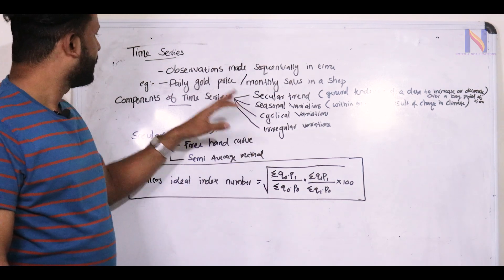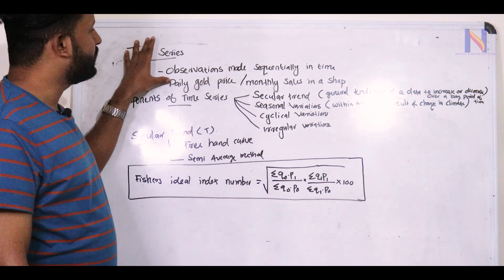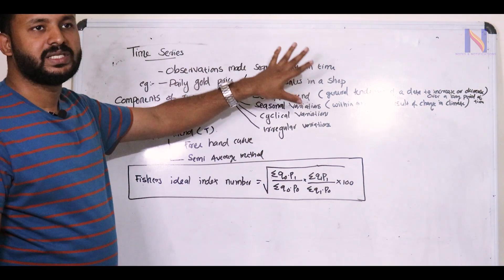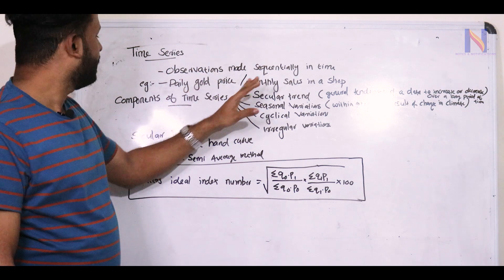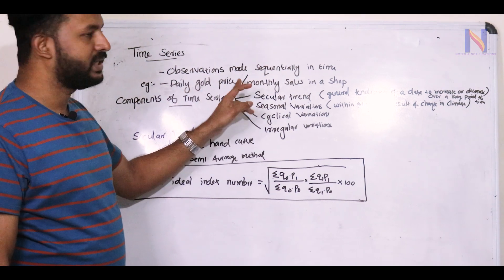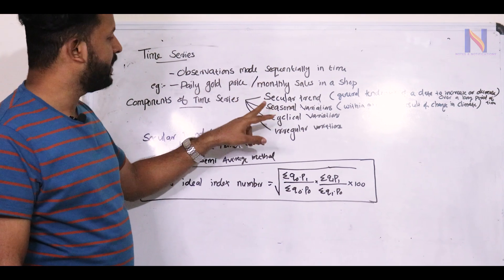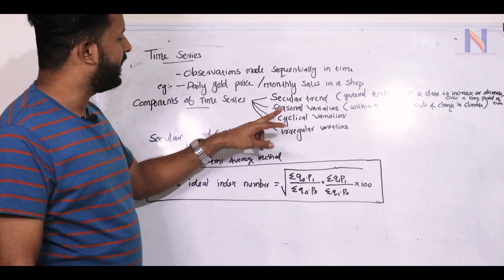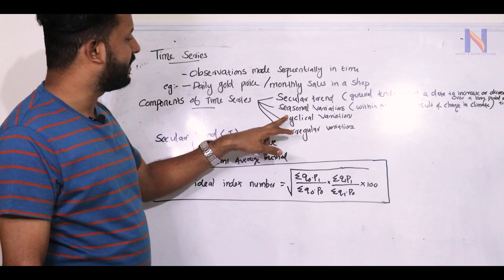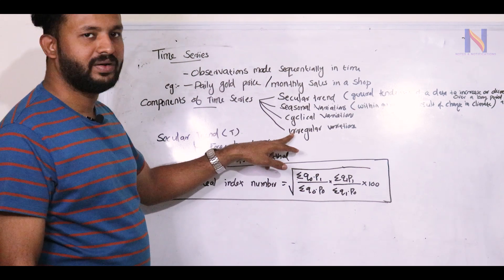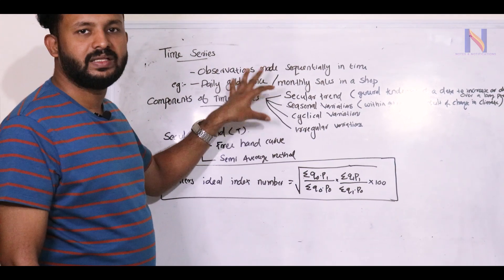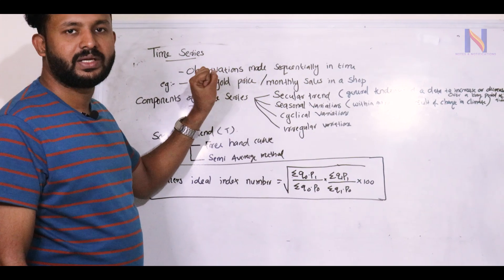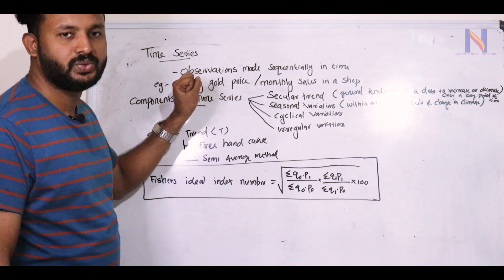A time series is made by observations made sequentially in time. The four components are: Secular Trend, Seasonal Variation, Cyclical Variation, and Irregular Variation. This can be shown in a short answer.